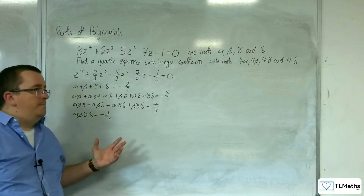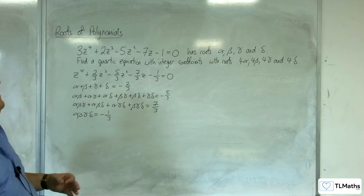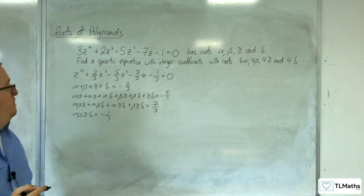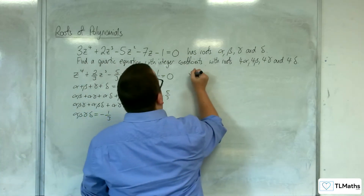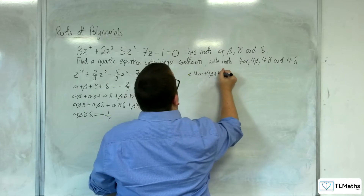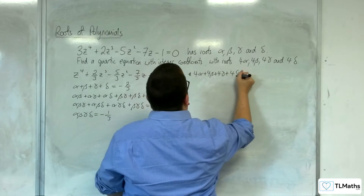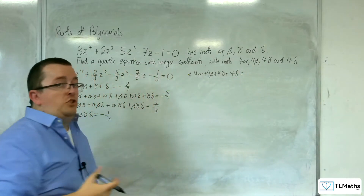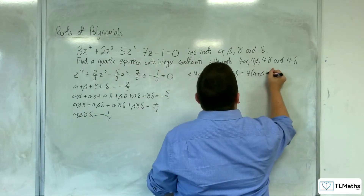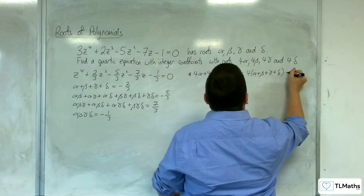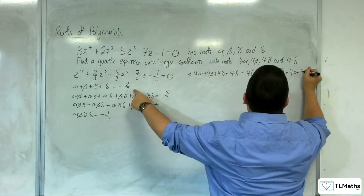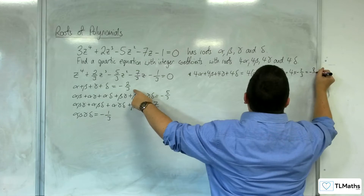So we've got those locked in. Now, because we're looking at 4 alpha, 4 beta, 4 gamma, 4 delta, we need the sum of those four roots. So 4 alpha + 4 beta + 4 gamma + 4 delta is just 4 lots of (alpha + beta + gamma + delta), which is 4 lots of -2/3, giving us -8/3.